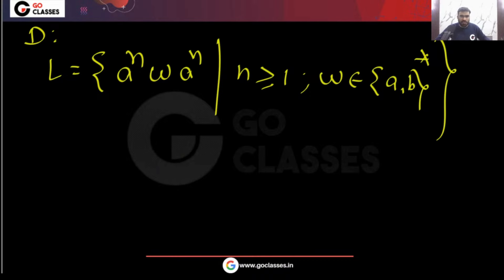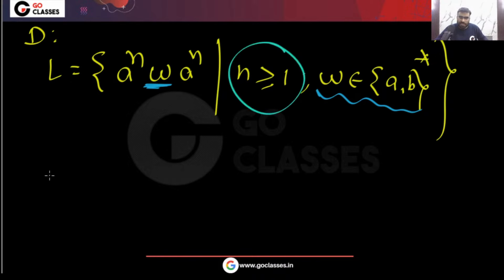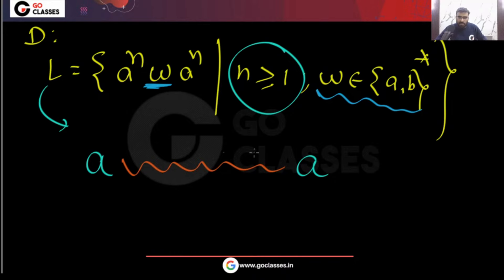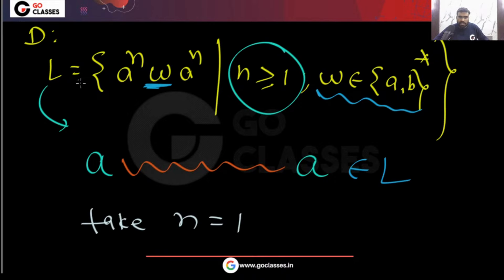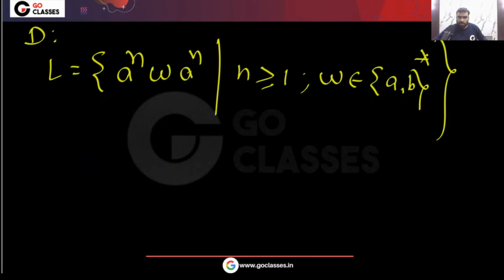What is this language? w is any binary string over {a, b}. Since n ≥ 1, you can take n = 1. All strings which start with 'a' and end with 'a' will belong to L — you can do anything in between. So all these strings will belong to L.